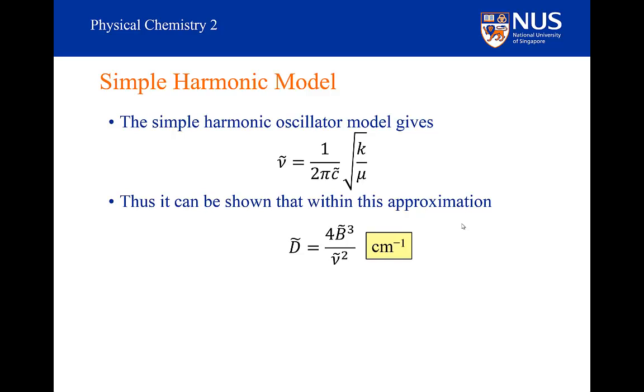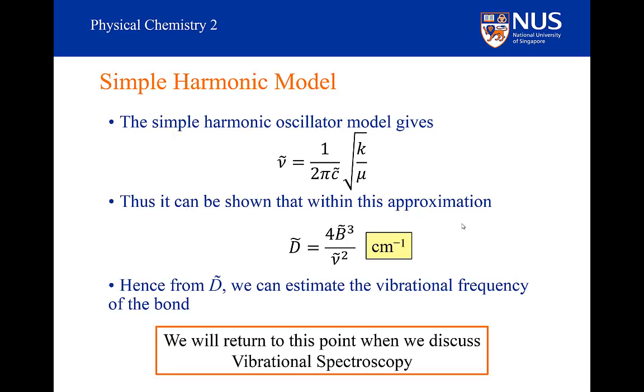If you divide 4 times B cubed by D, you get the frequency squared. You can confirm this yourself by using the expressions for B and D on the previous slide. So if we are able to determine B and D, we can get the vibrational frequency, and I will be returning to this when we discuss vibrational spectroscopy later in this course.